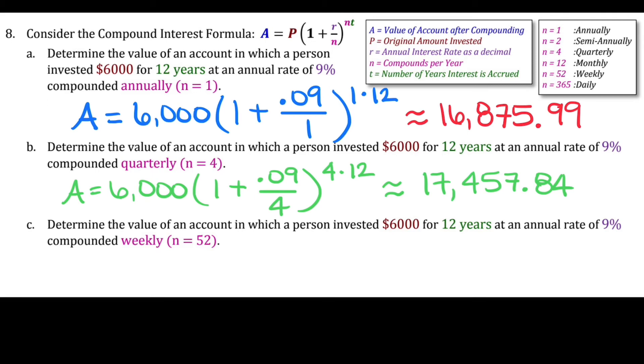This is how much money will be accrued if compounded quarterly. Lastly, we'll do an example where it's compounded weekly, which gives us $17,651.59.